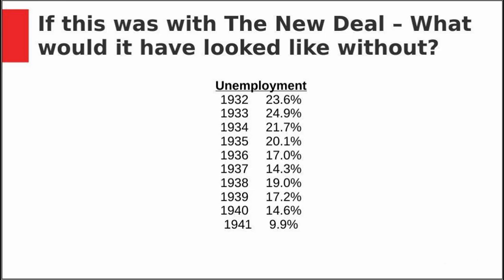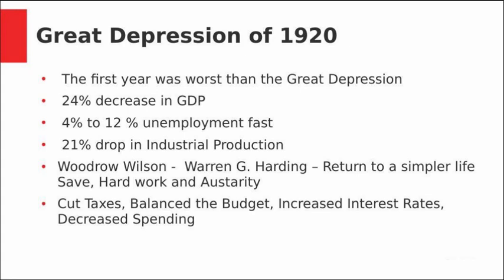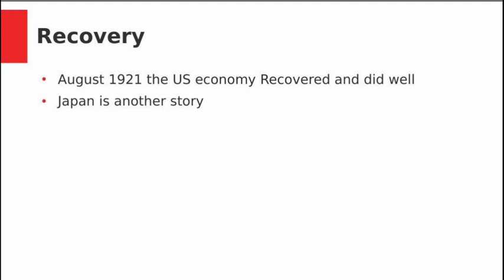If monetary and fiscal policy helped alleviate the Great Depression in the 1930s, how would you explain the Depression of 1920? The first year was worse than the Great Depression of the 1930s — GDP fell by 24%, unemployment went from 4% to 12%, and industrial production dropped 21%. Woodrow Wilson had a stroke and his wife took over, with little going on in that administration. Warren G. Harding called for a return to a simpler life — save, work hard, austerity. He cut taxes, balanced the budget, increased interest rates, decreased spending, and did the opposite of the Keynesian playbook. The result? By August 1921, the U.S. had recovered and was doing well. Japan, by contrast, continued monetary and fiscal stimulus and stayed in depression throughout the 1920s.